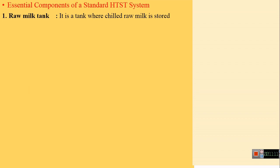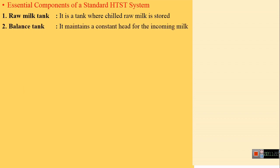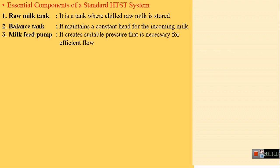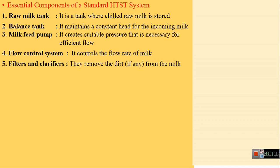The second component is the balanced tank, which maintains a constant head for the incoming milk — always keeping a minimum amount of milk at a constant level. The third is the milk feed pump, which creates suitable pressure for efficient flow of milk through the system. Next is the flow control system — valves controlling the flow rate of milk. Then come filters and clarifiers, which remove dirt present in the milk.